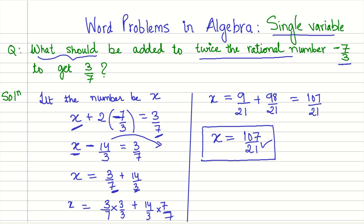or to even keep it more simple, if we substitute in this equation, x minus 14 by 3 equals 3 by 7, when you try to solve the left-hand side using this value of x, we should get 3 by 7. So this was a word problem in algebra that involved rational numbers. In the next video, we will see another problem that involves another concept of mathematics.